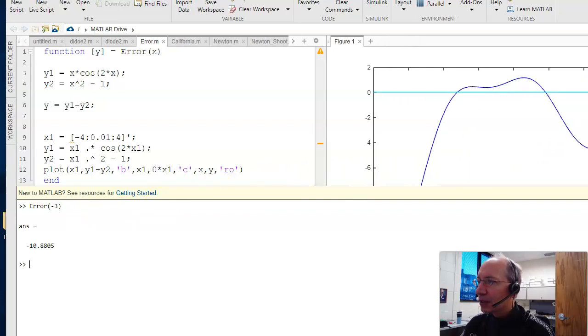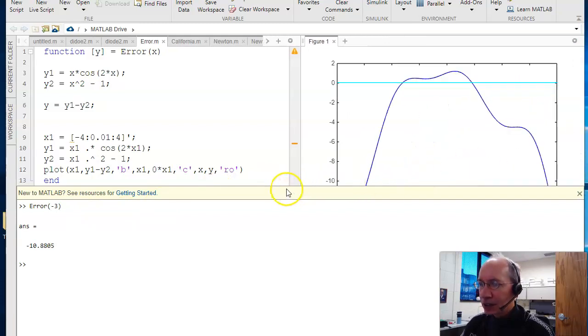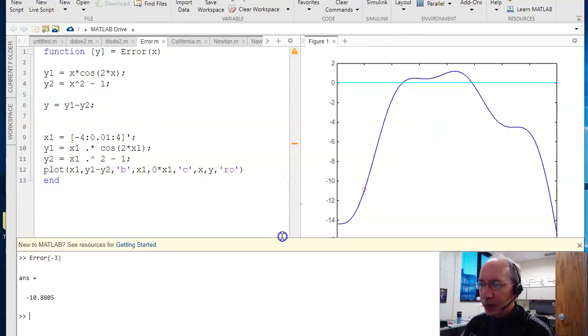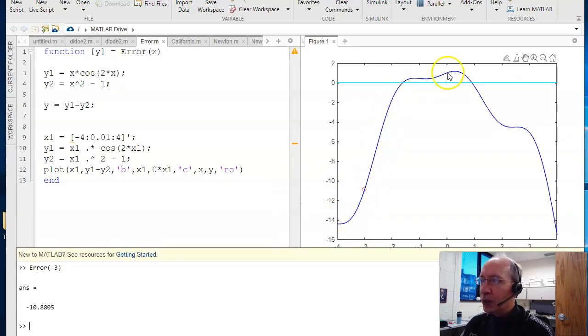What that does, let's bring this down a little bit, this is what y1 minus y2 looks like. I'm trying to find the zero crossings. Is the zero crossing at minus 3? The answer is no, and I'm off by 10. Is the zero crossing at minus 2? Better. The error is smaller.